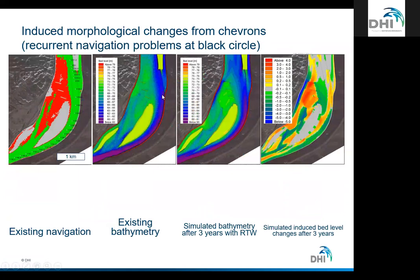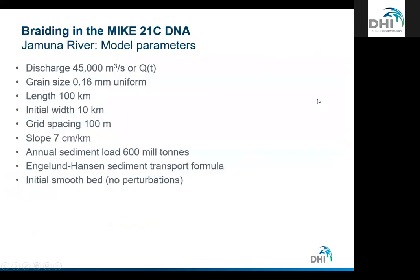Looking at bathymetric changes on the Danube, this shows existing navigation bed levels, and then simulated results after three years with those chevrons in place. You can see in the reddish areas it's built up almost about four meters behind the chevrons. There's still some buildup, but it has enhanced navigation through the main channel. So this says we're achieving some of the objective, but there are still some issues with part of the channel on one side. One of the long-term projects that really led to MIKE 21C's development was looking at braiding in large alluvial rivers in Bangladesh, particularly the Jamuna River — a river about 10 kilometers wide with high discharge, fine sand, and high sediment loads.